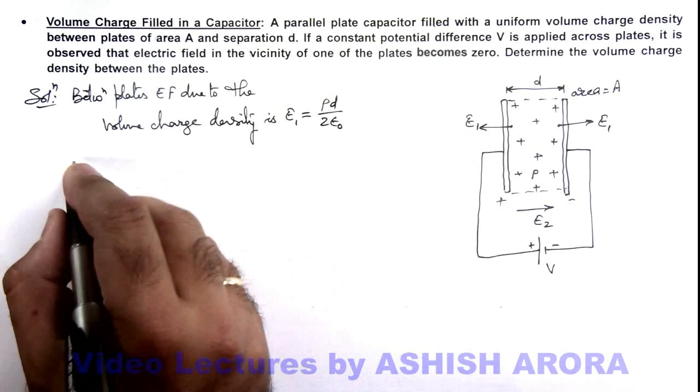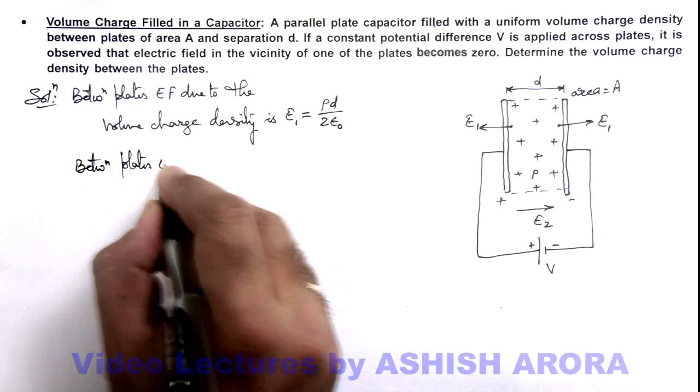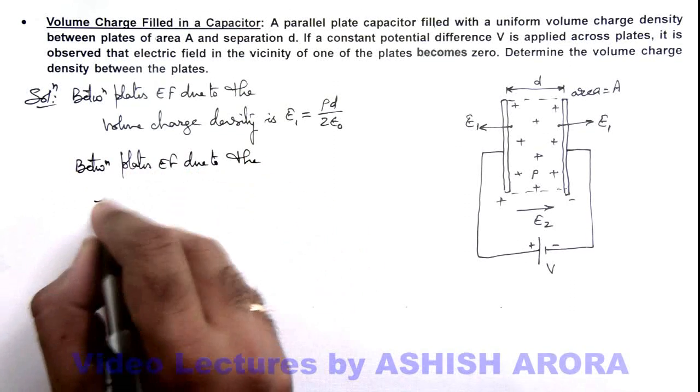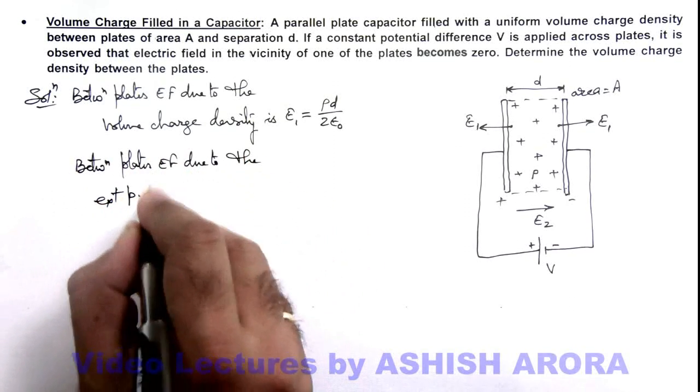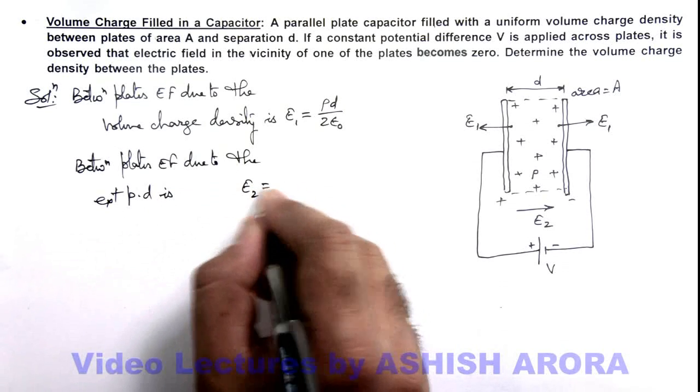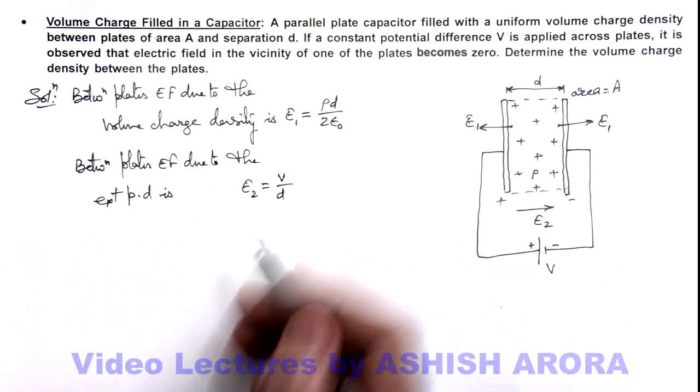If we calculate the electric field between the plates due to the external potential difference, we can write it as E₂, that is V/d, because V is the potential difference and d is the plate separation.